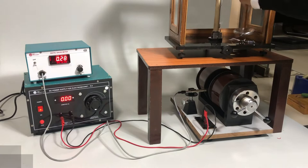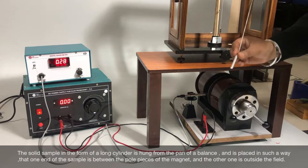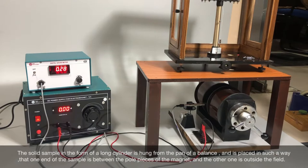The solid sample in the form of a long cylinder is hung from the pan of a balance and is placed in such a way that one end of the sample is between the pole pieces of the magnet and the other one is outside the field.